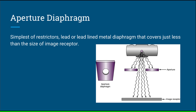Aperture diaphragm: They are the simplest of restrictors. They are lead or lead-lined metal diaphragms that cover just less than the size of the image receptor. They are most familiar in trauma settings and are used with a fixed SID.